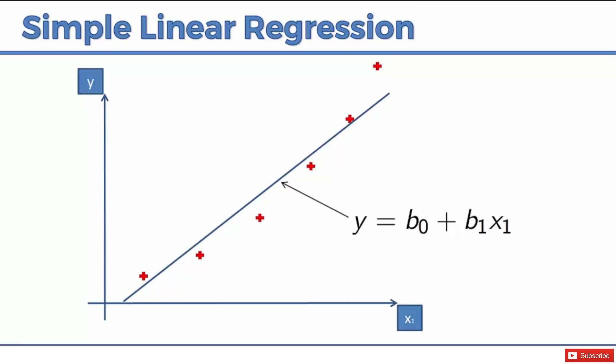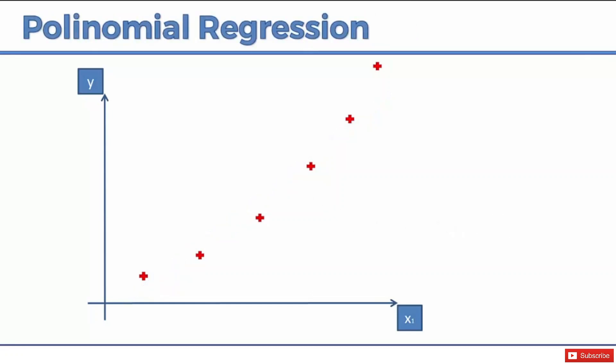So how can we correct that? Well, we can try to correct that by using a polynomial regression. Let's have a look. So instead of the linear regression, we're going to conduct a polynomial regression. And that, in this case, fits perfectly.